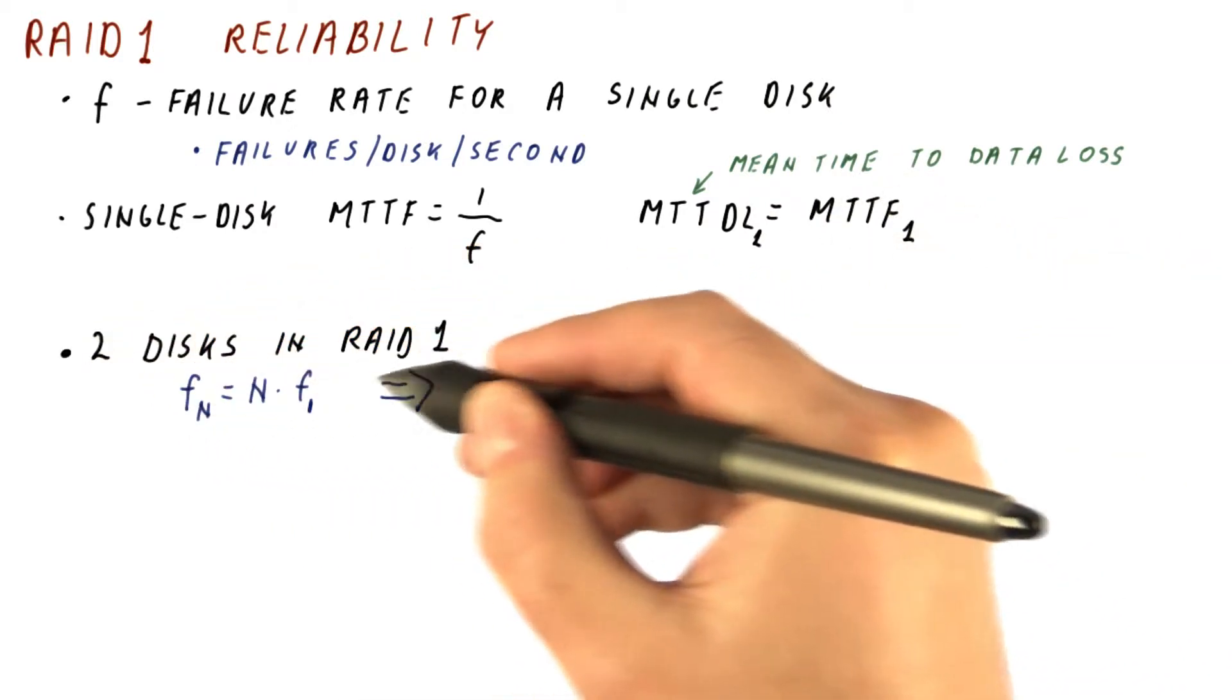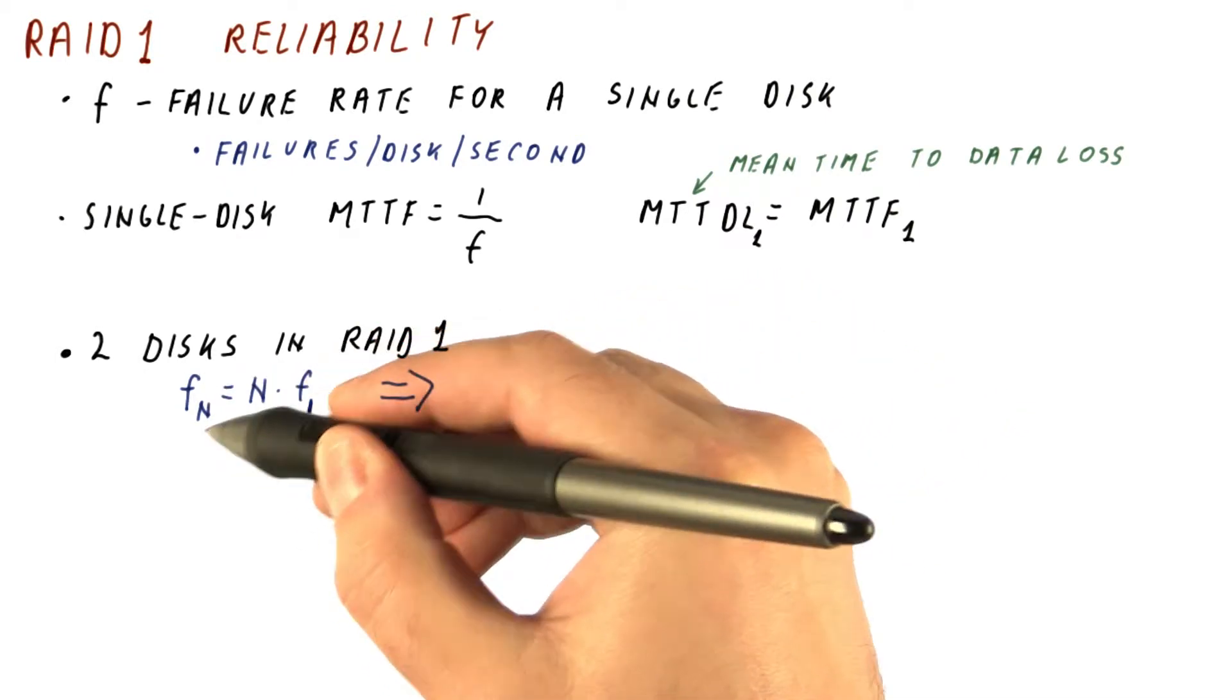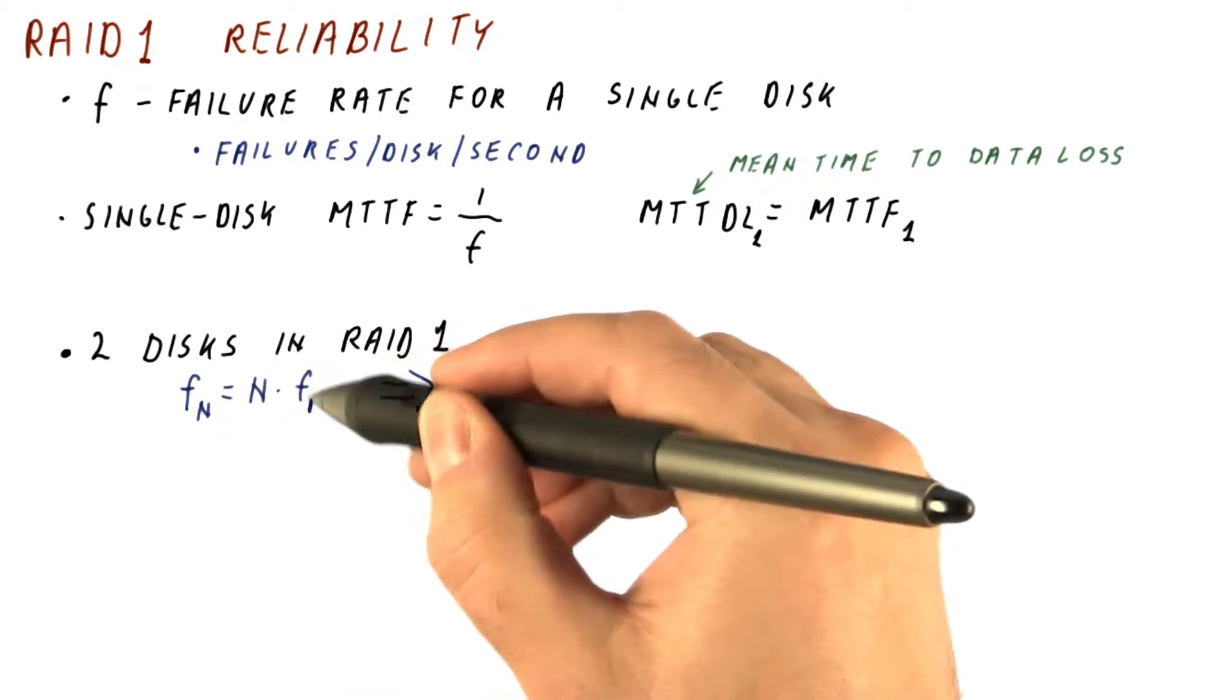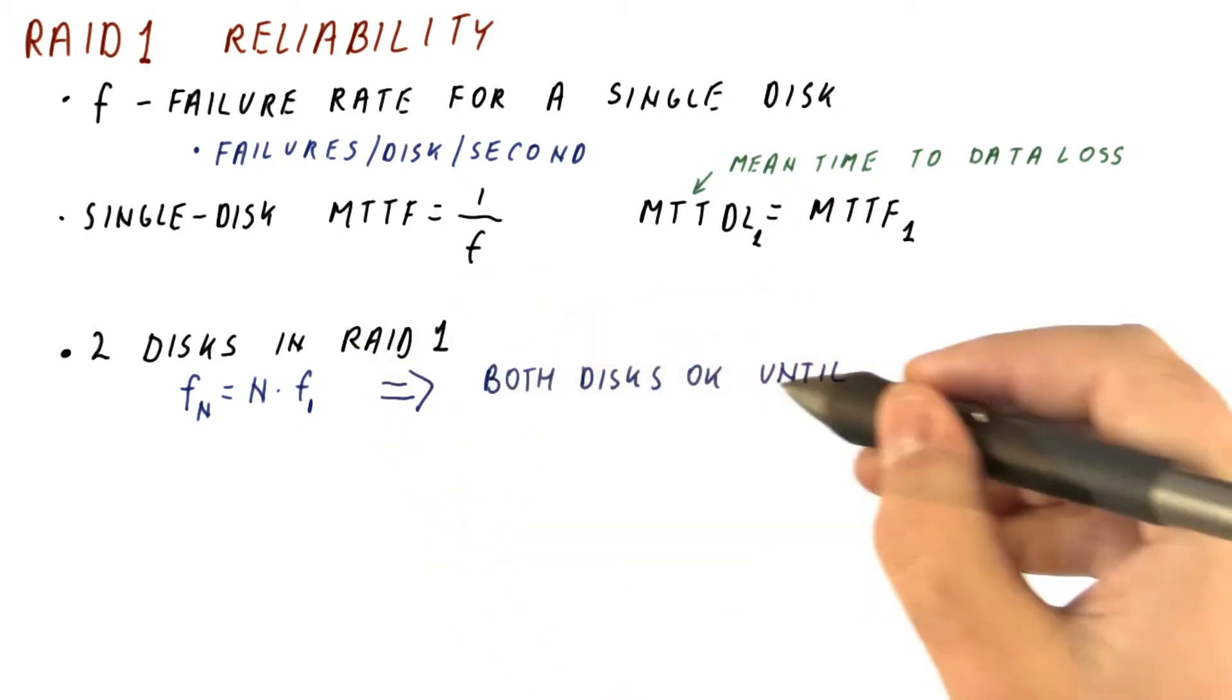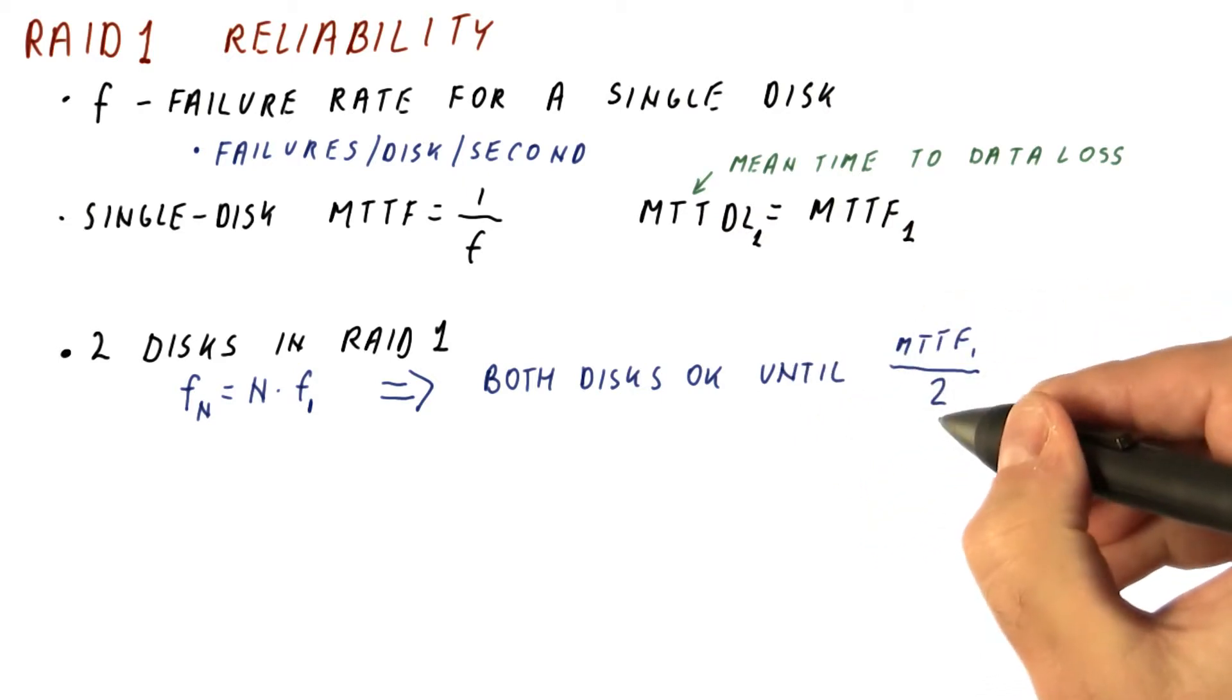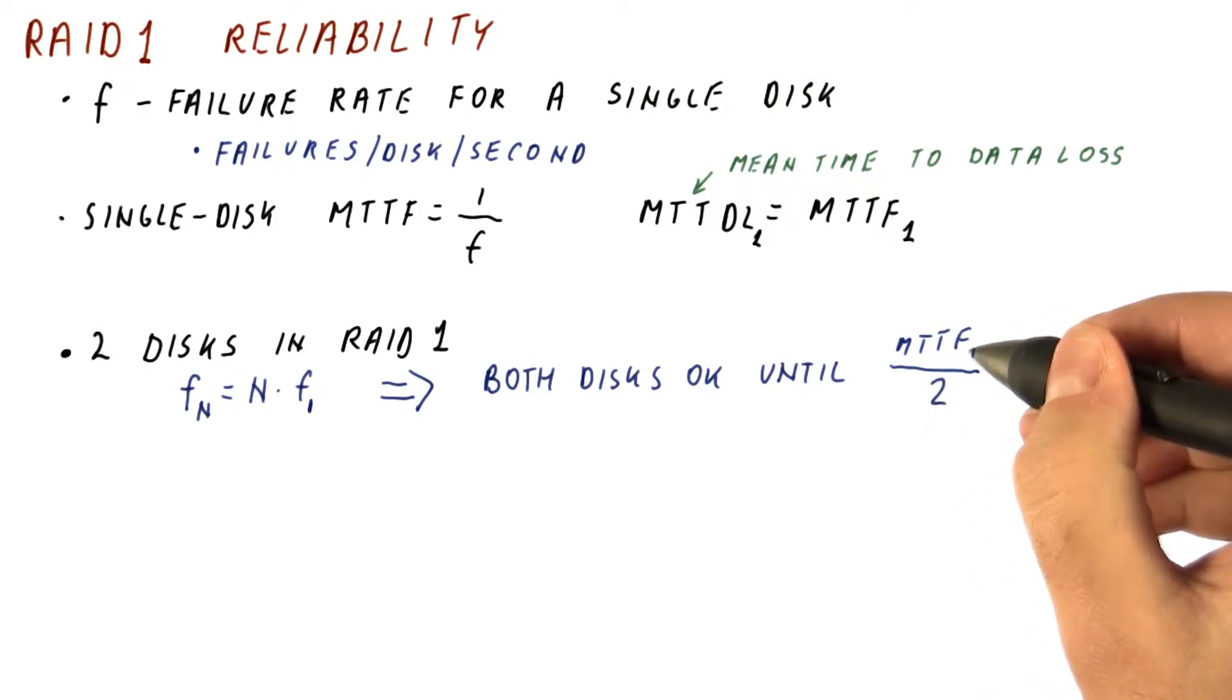Well, let's say now that we have two disks in RAID 1. And remember that the failure rate when we have more than one disk is n times the failure rate of one disk as long as all of the disks are working. So what we have really is that both of our disks in RAID 1 are okay until the time MTTF of one disk over two. This is the expected time when one of the disks will fail.